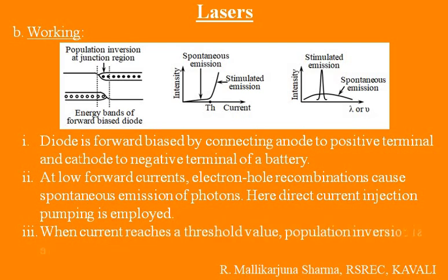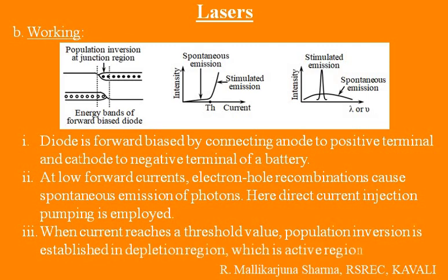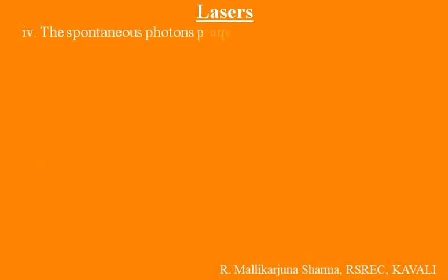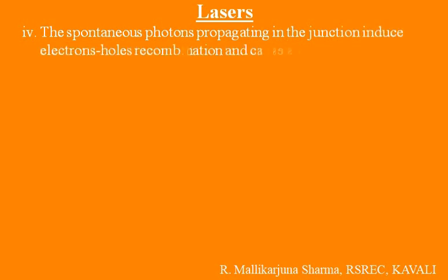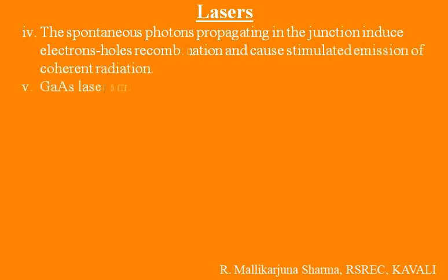Third point: When the current reaches a threshold value, population inversion is established in the depletion region, which is the active region. Fourth point: The spontaneous photons propagating in the junction induce electron-hole recombinations and cause stimulated emission of coherent radiation.